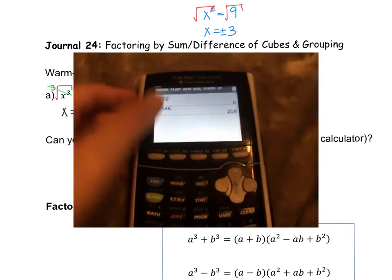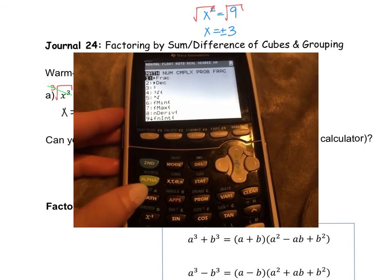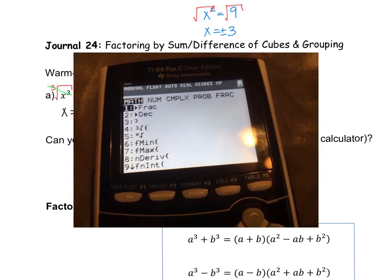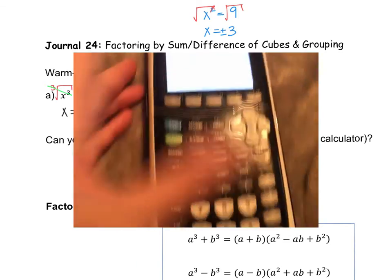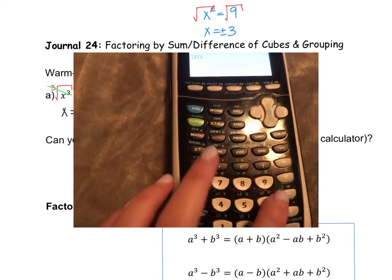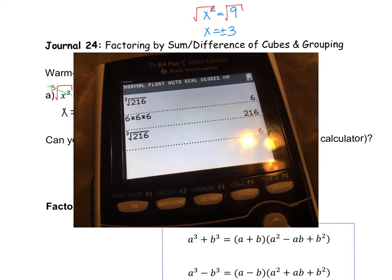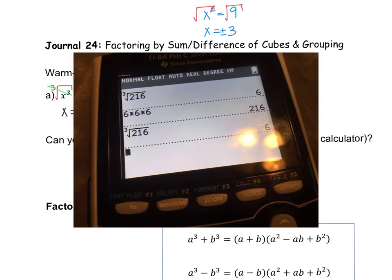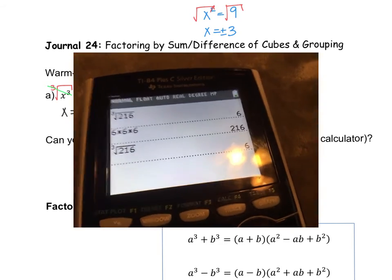To find this on the TI-84 calculator, hit the Math button first and you'll get a bunch of options. You want the cube root option, which is option 4. You can use the arrow key or just press 4, then hit enter to get the cube root. Then type in 216 and hit enter again to get 6. You can also verify by just doing 6 times 6 times 6 to get 216.